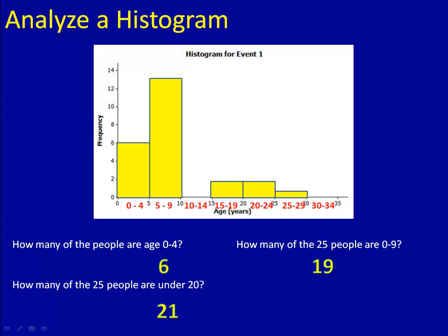0 to 4 is our first bar. We had a total of 6 people. 0 to 9 covers our first 2 bars. We had 6 from 0 to 4, 13 from 5 to 9. That gives us a total of 19 people.